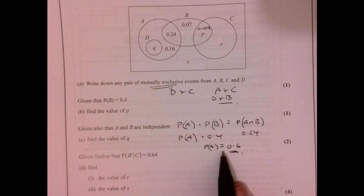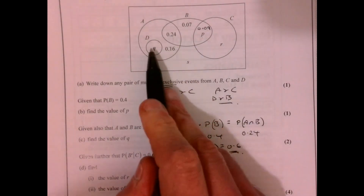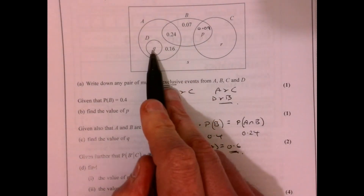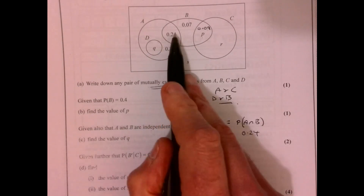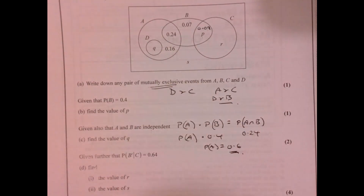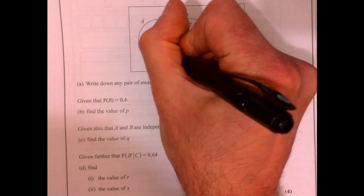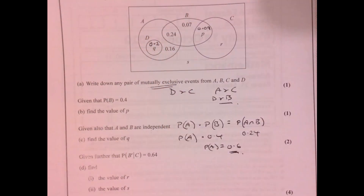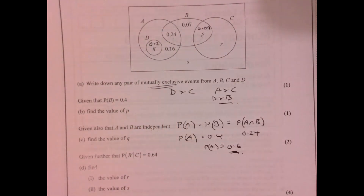Now we know that P(A) is 0.6, we can work out what Q is. This region plus this one plus this one adds up to 0.6, so Q has to be 0.2.